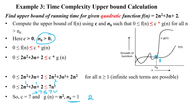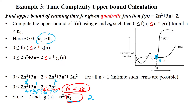Next, substituting n = 2: 2·4 + 3·2 + 2 = 8 + 6 + 2 = 12, which is less than or equal to 7·4 = 28. So 12 ≤ 28 is also true. From n₀ = 1 onwards, the condition f(n) ≤ c·g(n) is satisfied, where c = 7 and g(n) = n².